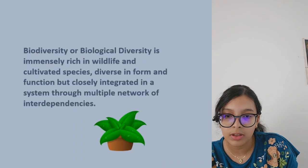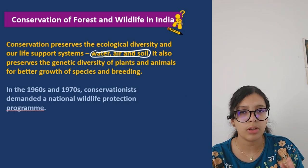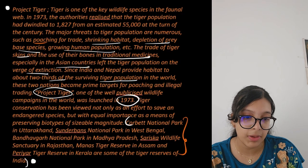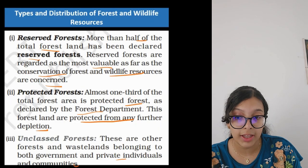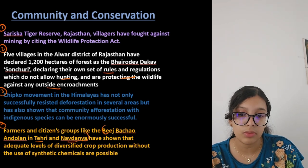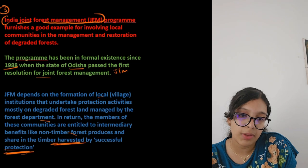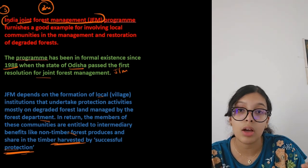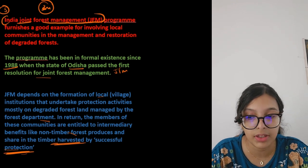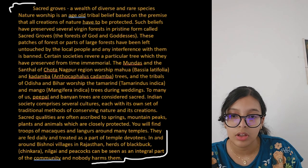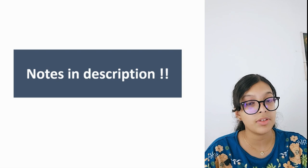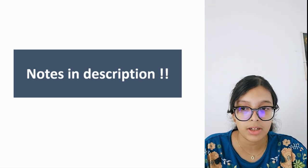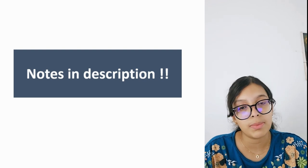To summarize this chapter: the main topics are biodiversity and the interdependence among species, conservation, Project Tiger with names and locations of tiger reserves, the three forest classifications, and community and conservation including the four to five examples. Three-mark questions can come directly from the JFM program — what it is and how local people benefit. Sacred groves are less important. If you liked this lecture, hit subscribe and like, and the notes will be in the description.